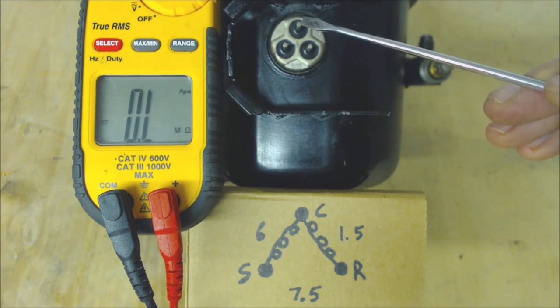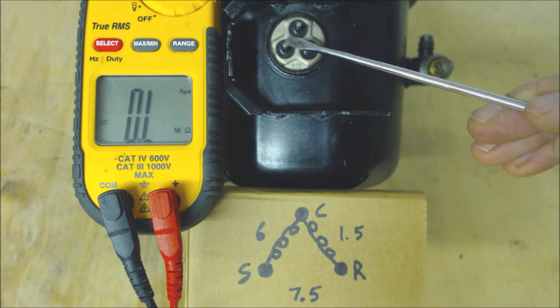So then we look at what was the second highest resistance reading and that was from here to here. So that means that this is your start tap.